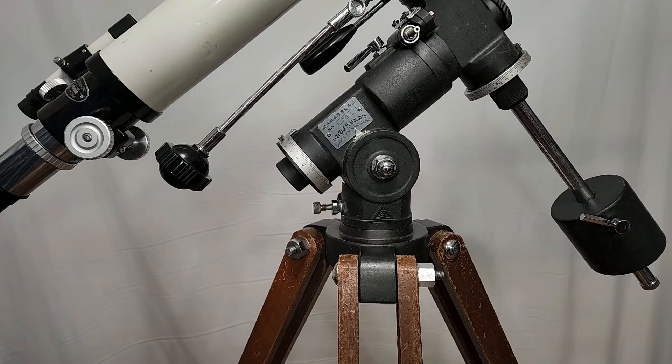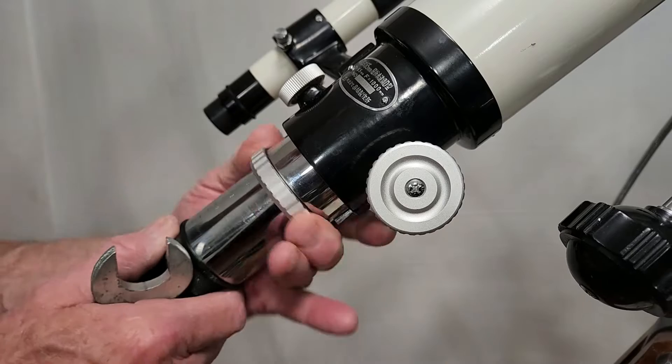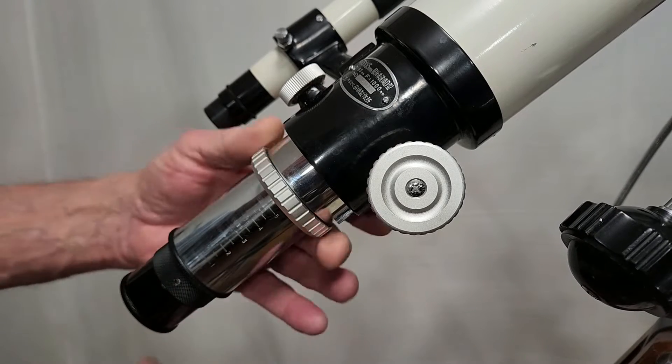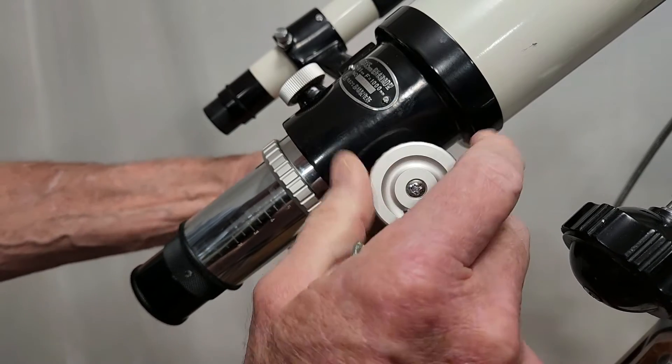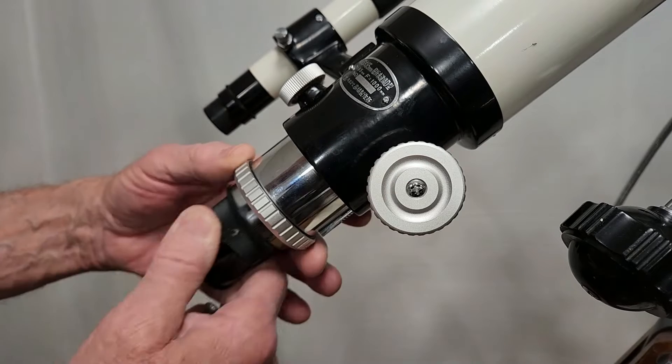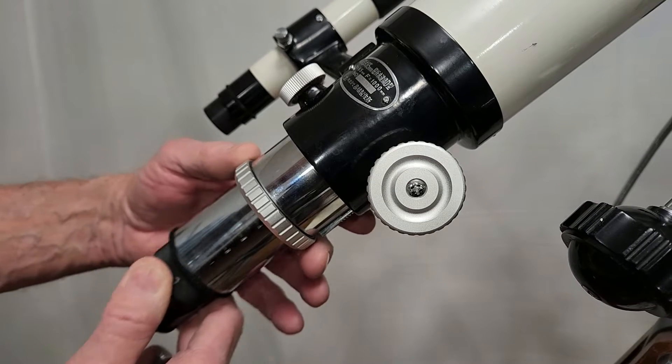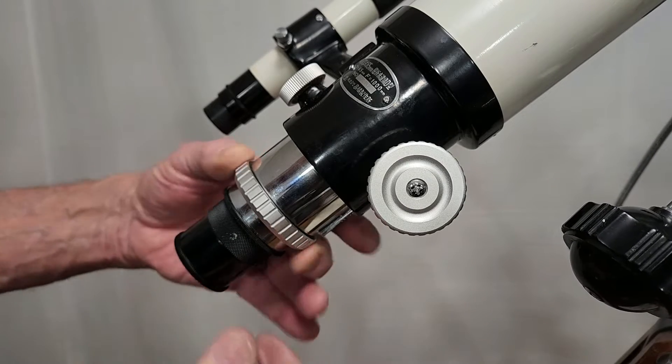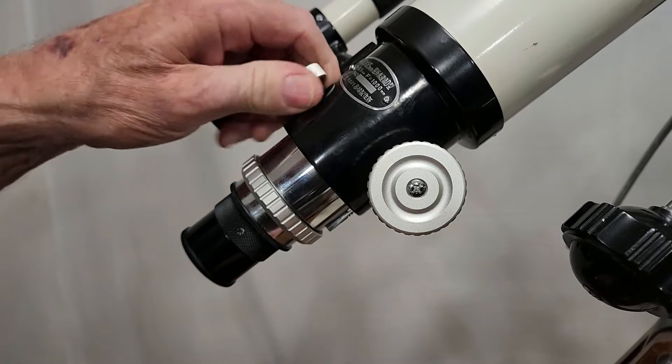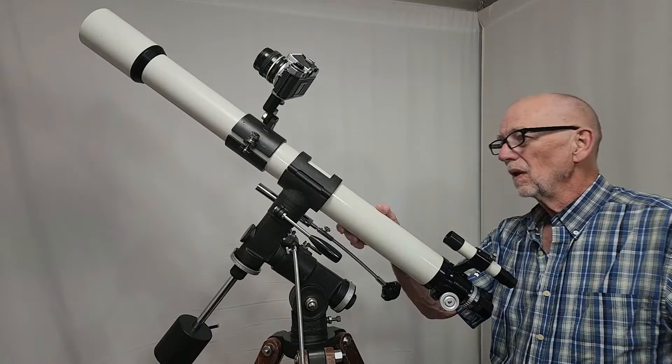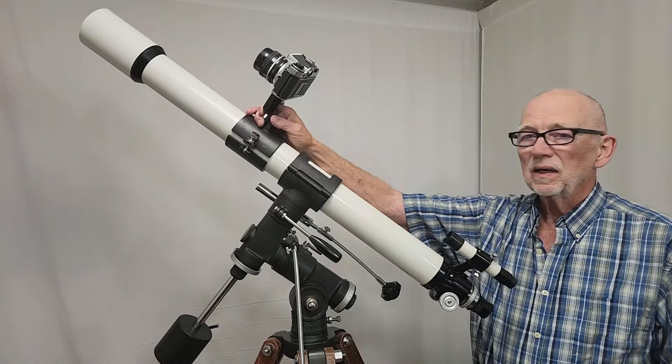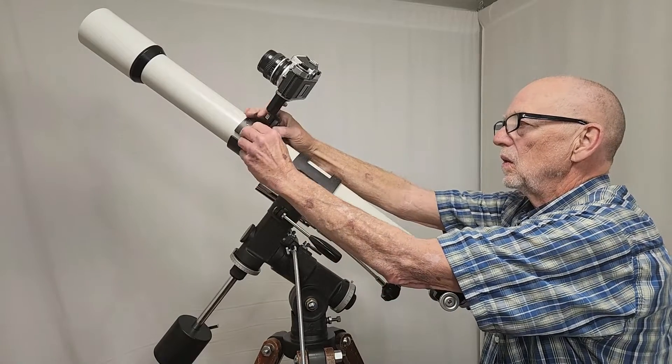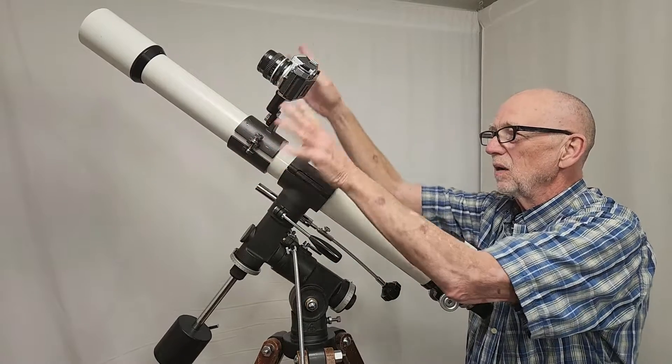The scope also features a rather nice sliding draw tube friction clamp here. There's your focuser. Your focuser doesn't have much travel, but it doesn't need much. You're going to be able to slide things back and forth here, slide your eyepiece back and forth to accommodate a star diagonal or straight through. Lock it down here, very nice. You can even lock down the focuser here.